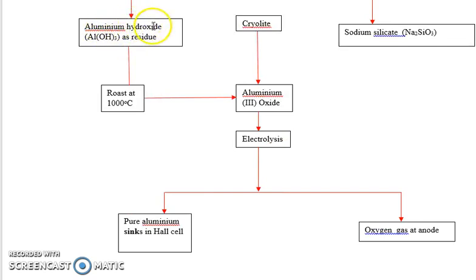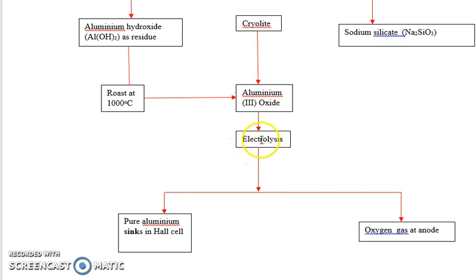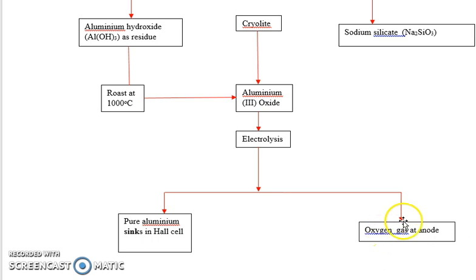The aluminium hydroxide found as the residue is then heated to about 1000 degrees Celsius. Cryolite is added to reduce or lower the melting point. This forms aluminium oxide, which then undergoes electrolysis in the Hall cell to form pure aluminium that sinks to the bottom. Oxygen gas is liberated at the anode, where most of it reacts with the anode to form carbon dioxide.